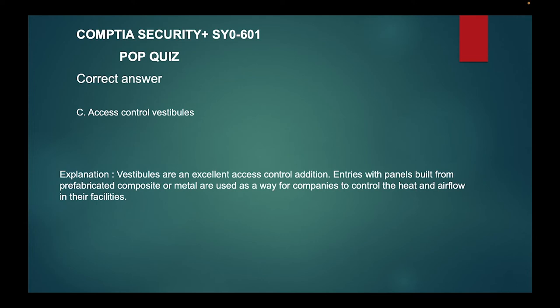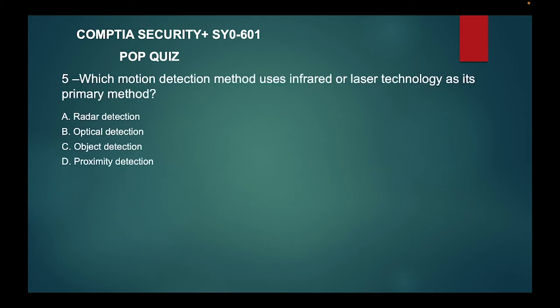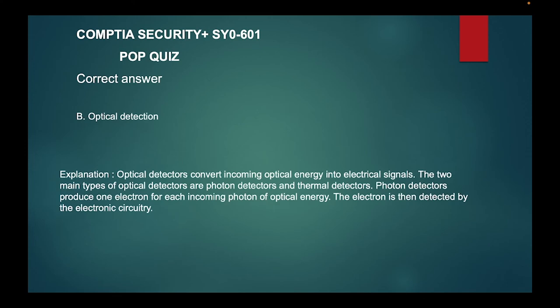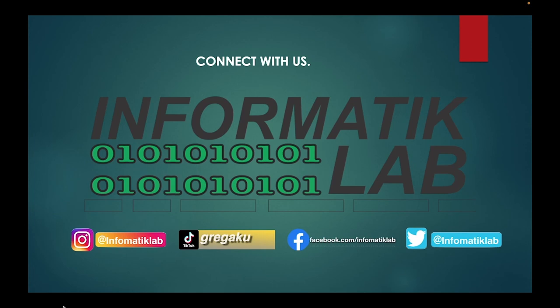Question five: which motion detection method uses infrared or laser technology as its primary method? A) Radar detection, B) optical detection, C) object detection, or D) proximity detection? The correct answer is optical detection. Optical detectors convert incoming optical energy into electrical signals. The two main types of optical detectors are photon detectors and thermal detectors. Photon detectors produce one electron for each incoming photon of optical energy, which is then detected by the electronic circuitry.